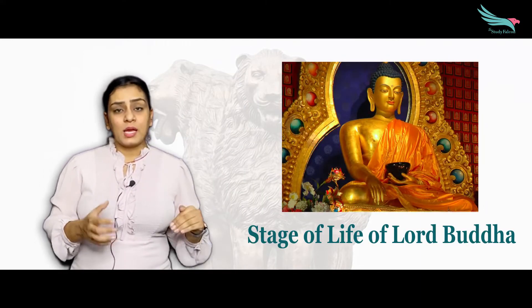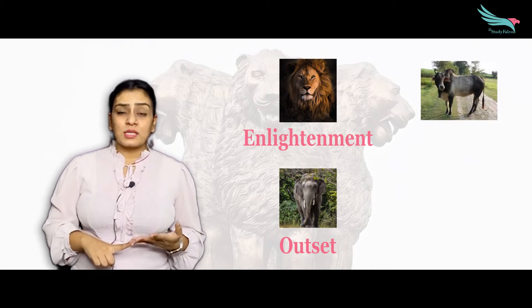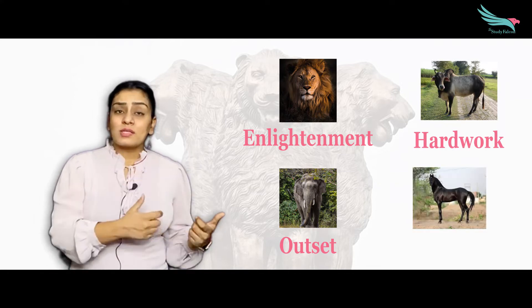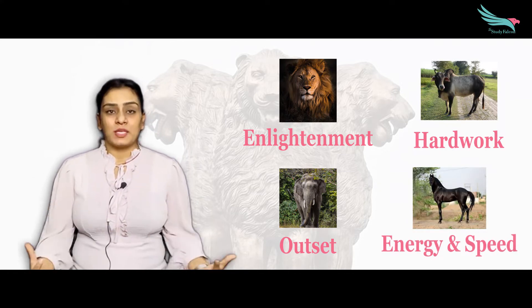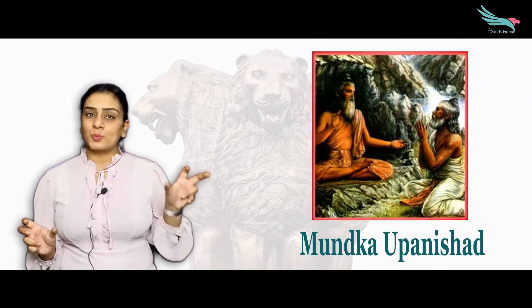These four animals represent the stages of Lord Buddha's life: the lion signifies enlightenment, the elephant signifies the outset, the bull signifies hard work, and the horse signifies energy and speed. Beneath the emblem, 'Satyamev Jayate' is inscribed, which means 'truth alone triumphs.' This phrase has been taken from the Mundaka Upanishad.